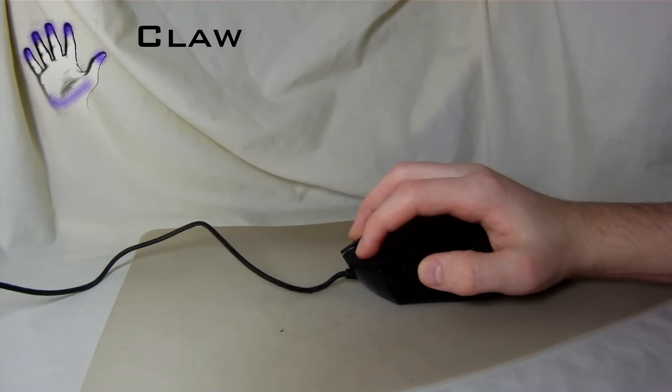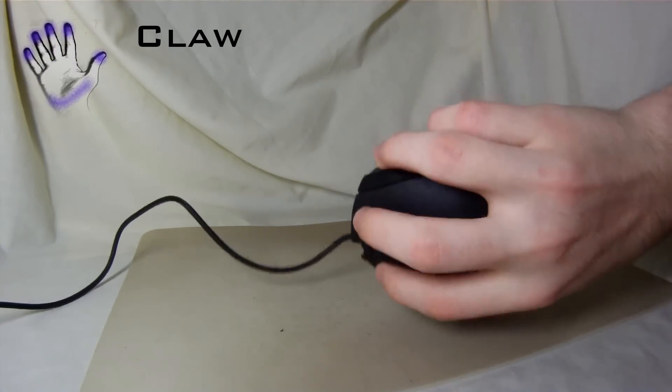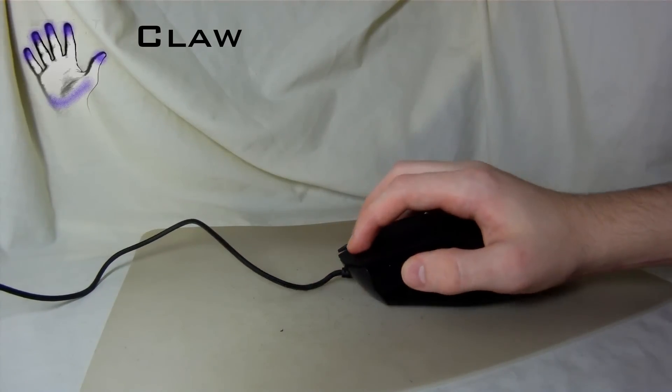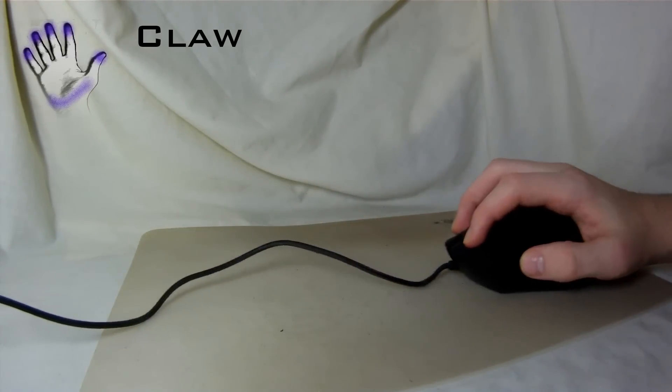The claw grip only uses six points of contact. This is kind of a midway grip when it comes to speed and precision. Claw users can use their fingertips for fine-tuned movements.